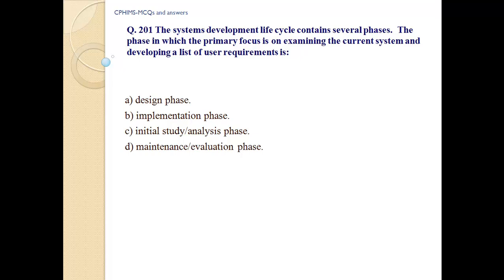The system's development life cycle contains several phases. The phase in which the primary focus is on examining the current system and developing a list of user requirements is: A. Design phase, B. Implementation phase, C. Initial study/analysis phase, D. Maintenance/evaluation phase.